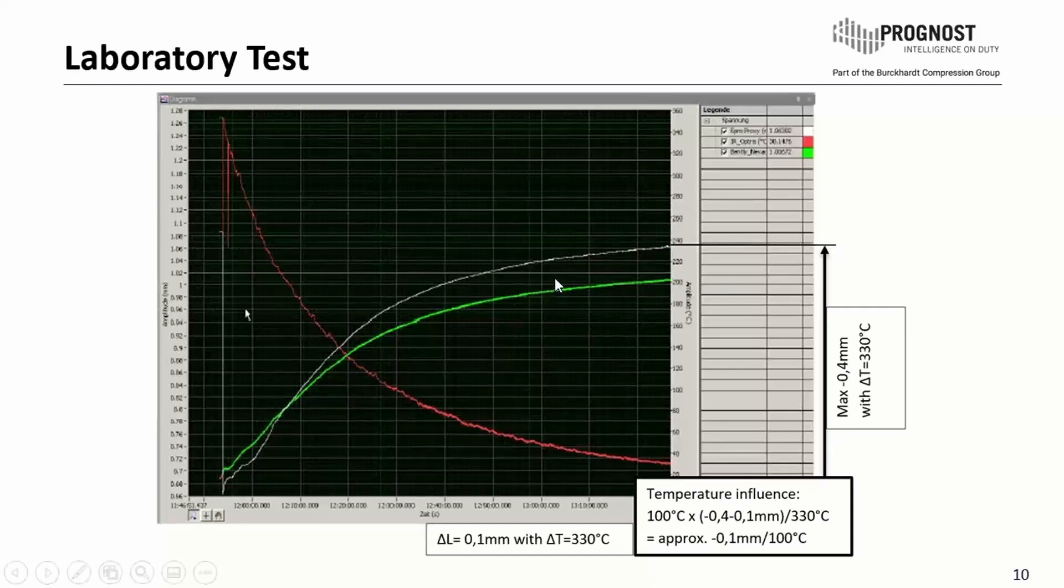Here we see the results of the laboratory test. We could see green and white lines, values from two different proximity sensors. We have the red line, which is the temperature. It goes from 330 degrees Celsius to approximately 40 degrees Celsius. We have a maximum value from the proximity sensors of 0.4 millimeters and we compared this delta L. We have some temperature influence from approximately 0.1 per 100 degrees Celsius.